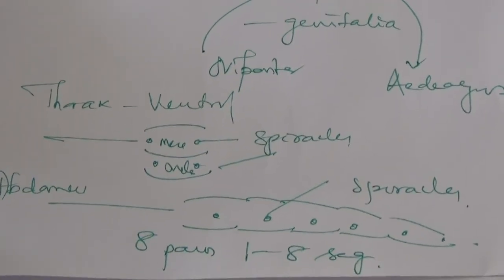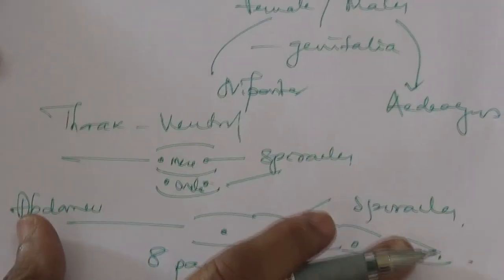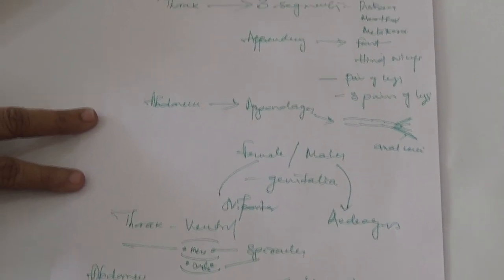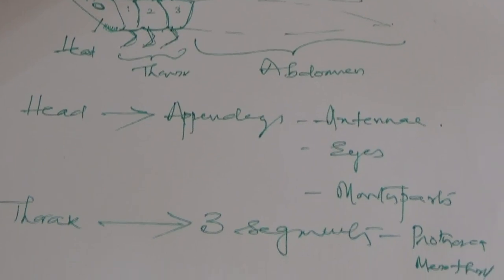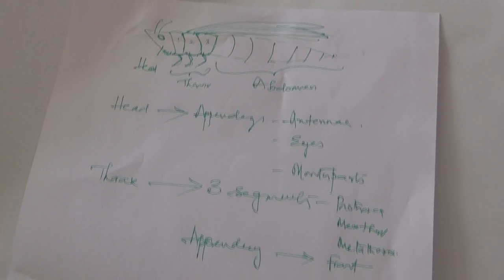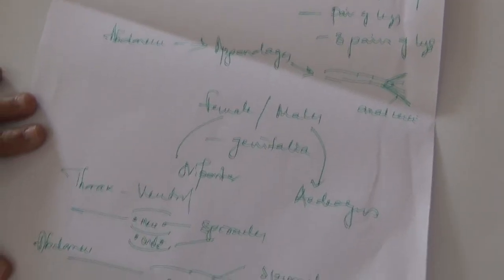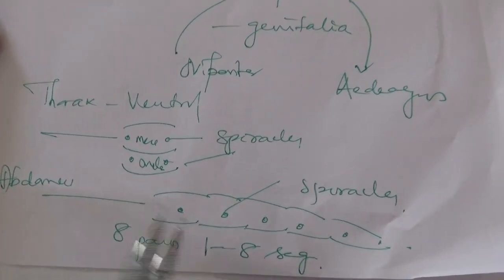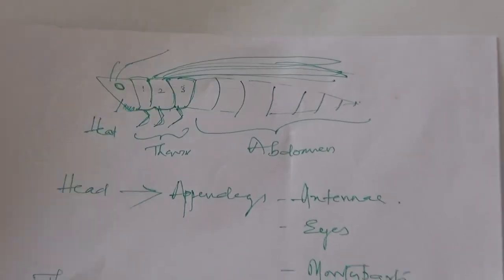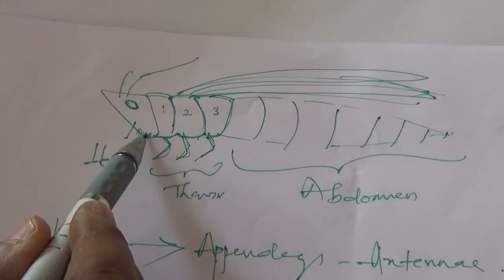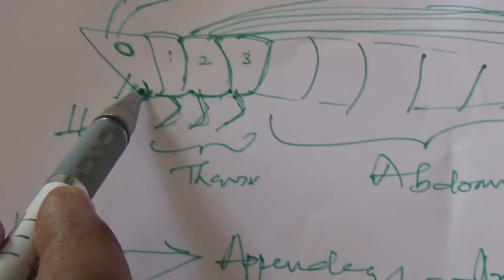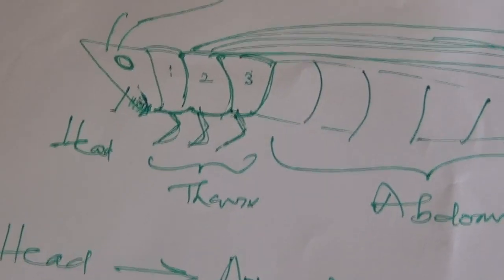We take grasshopper as the example where you can visualize all these structures on the insect body. Now, if you see an insect, we know already that insects will have sensory organs. The most important sensory organ is the antenna. So the first sensory organs are the antennae. Then the second one is the visual — that is the eyes. Then you have the maxillary palpi as sensory organs to test the taste of food material.